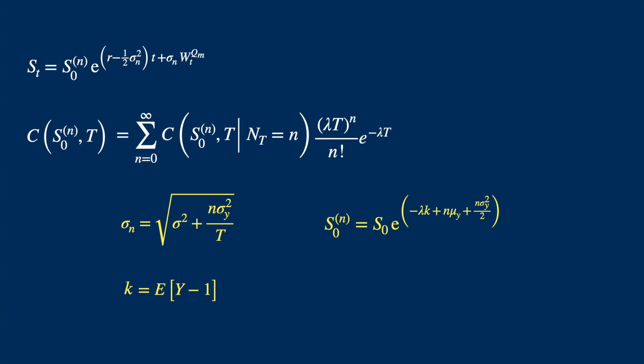We can express it in terms of the input parameters. You can write Y as exponential of log of Y, because log and exponential are inverse of each other. We can take the constant out of the expectation. We know log of Y is normally distributed and we also know that the expected value of the exponential of a normal variable is equal to the exponential of mean plus half the variance. So we have k in terms of the input parameters.